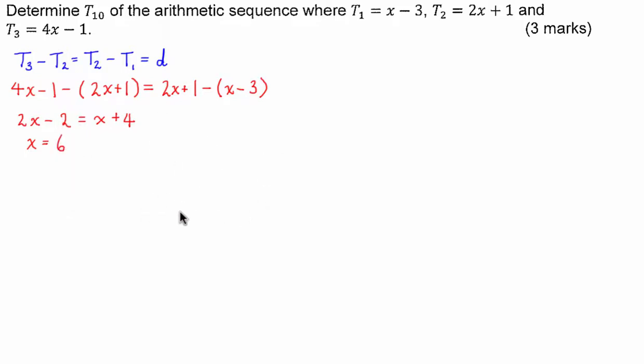So now we have the variable x equals 6. What I'm going to do is use this to ascertain what the terms t1, t2 and t3 are equal to. So we have t1 is going to be equal to 6 - 3 which is 3, t2 which is equal to 2 times 6 which is 12 + 1 which is 13 and t3 which is 4 times 6 which is 24 - 1 which is 23.